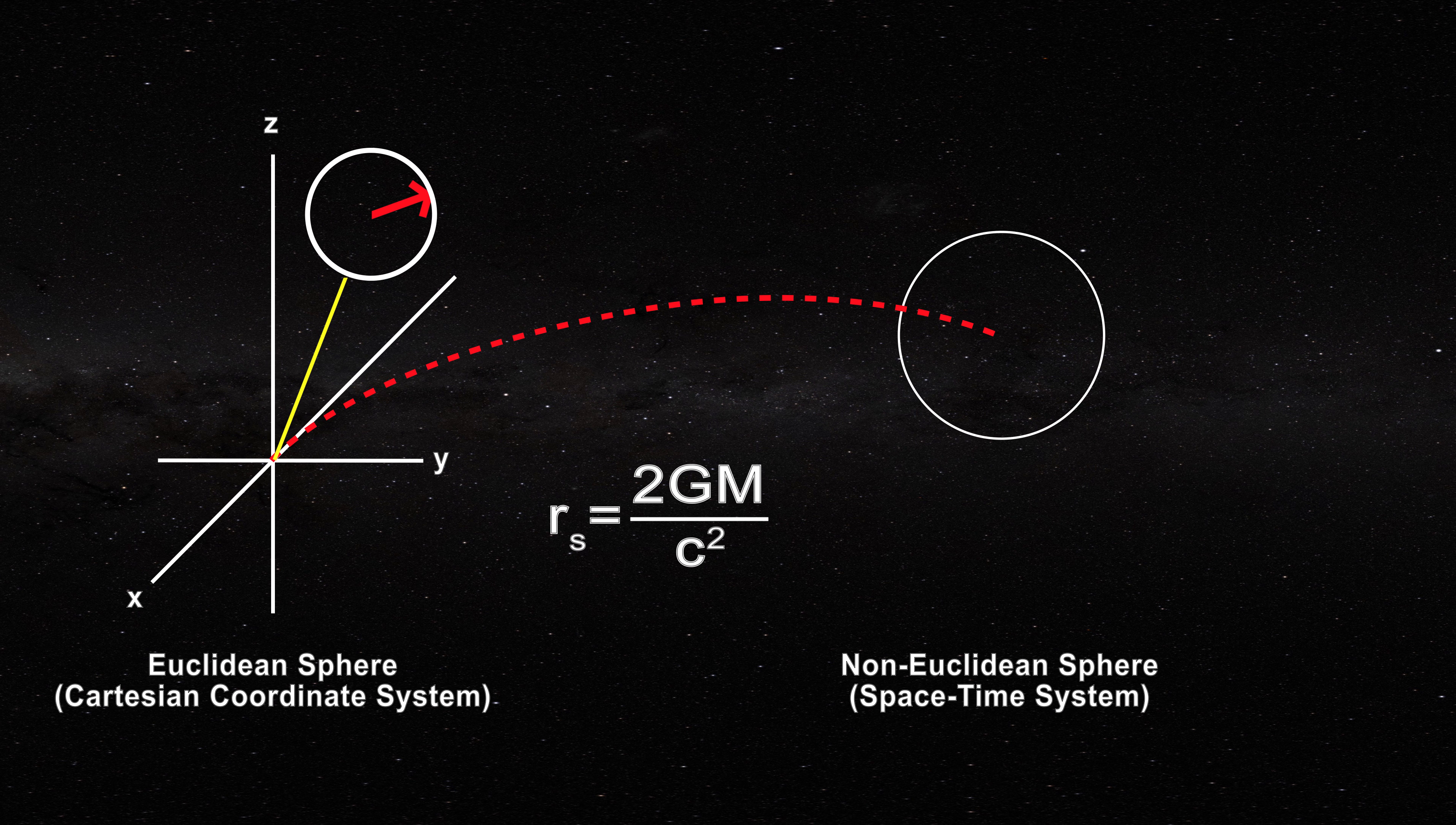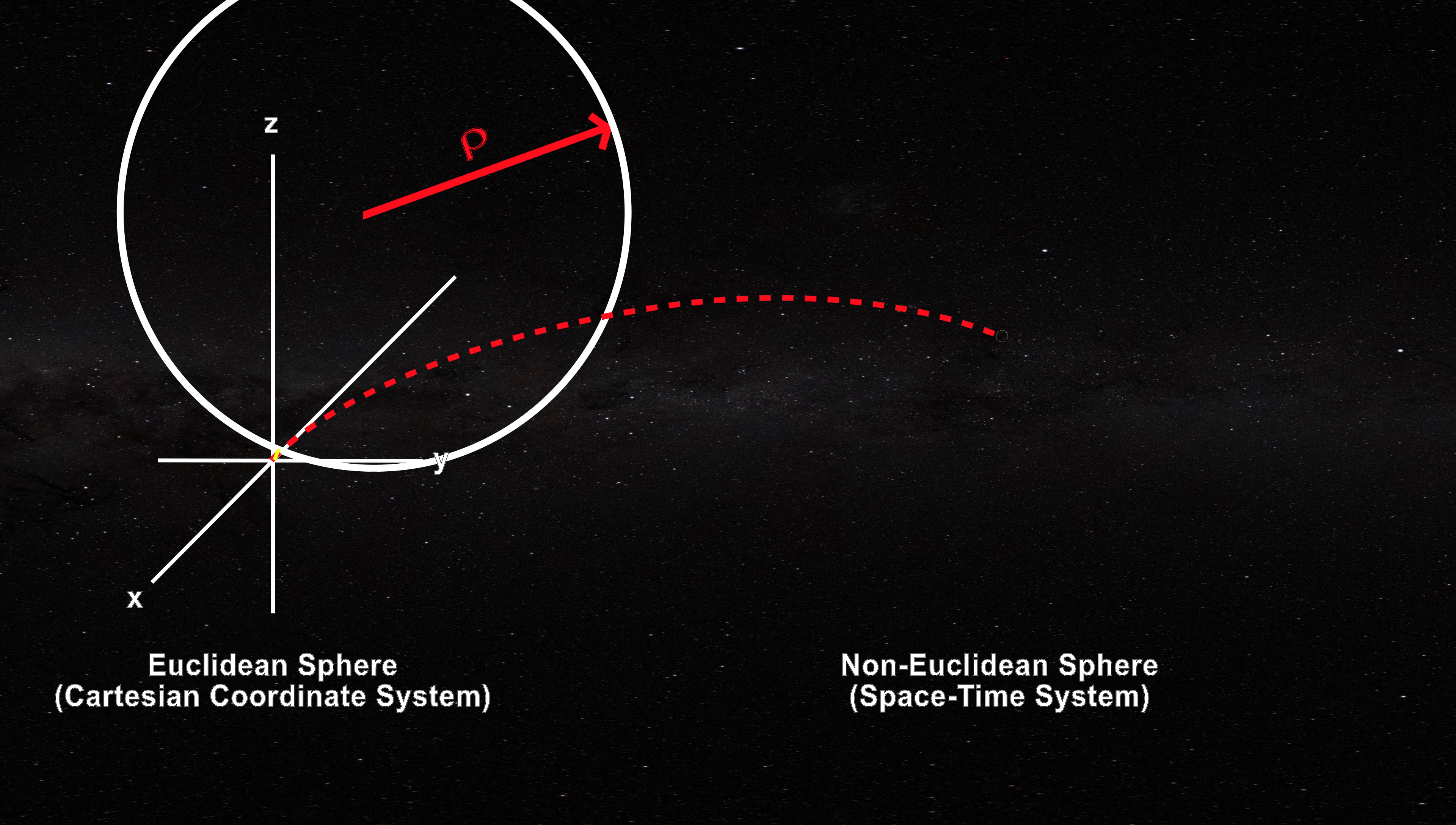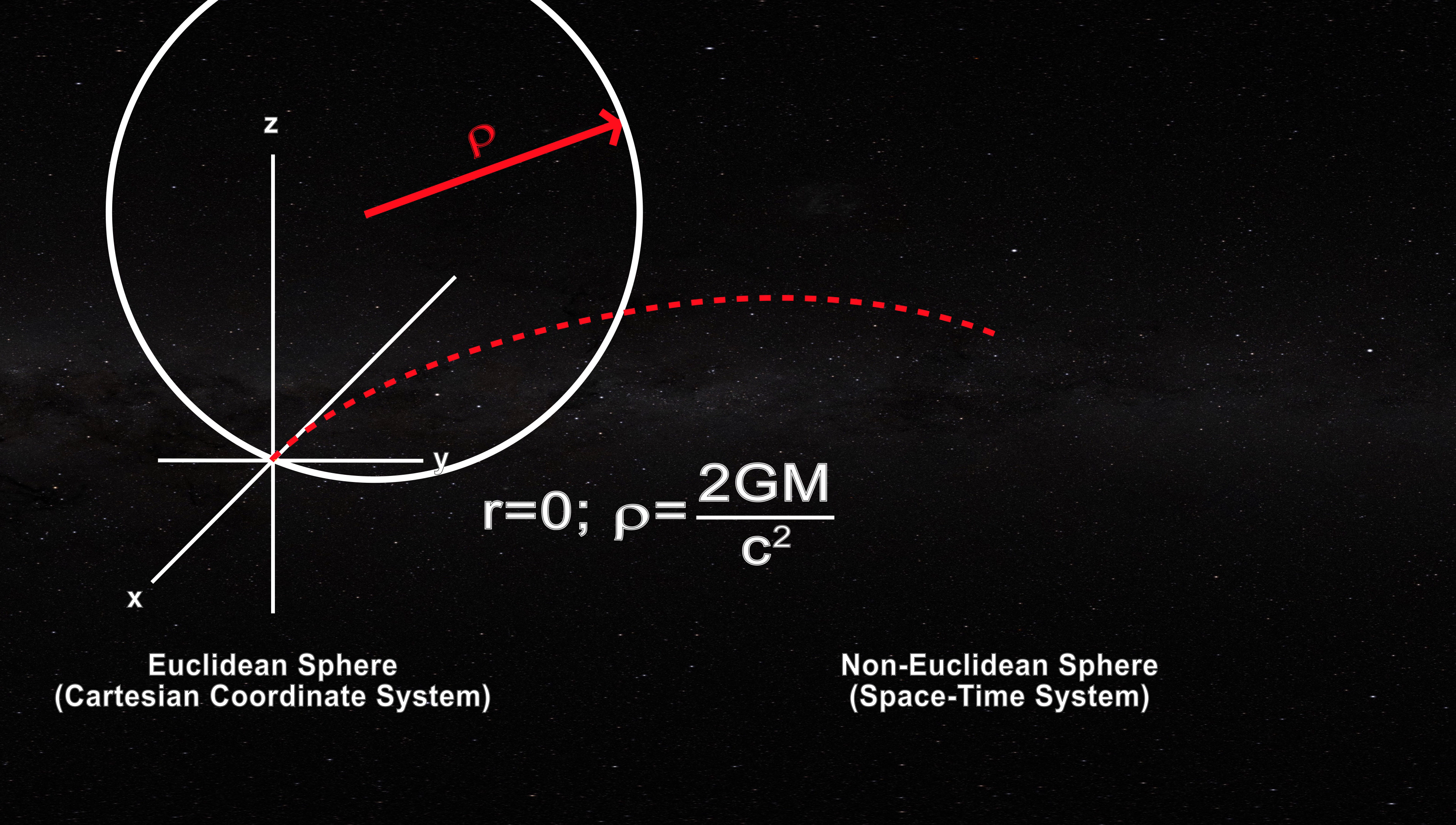As little r approaches zero, the radius rho of the Euclidean sphere grows, so that when little r equals zero, the radius of the Euclidean sphere has the value of the so-called Schwarzschild radius.